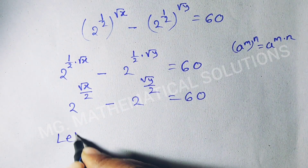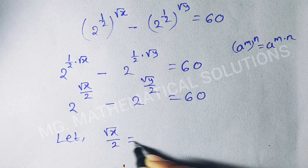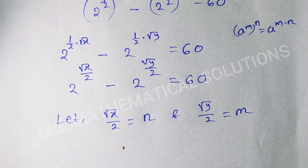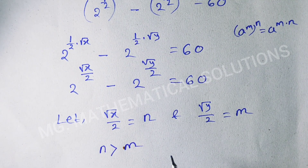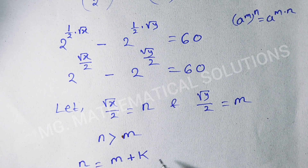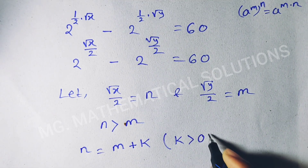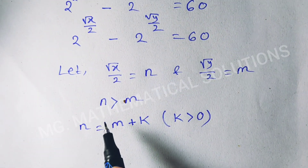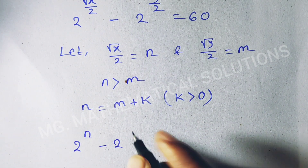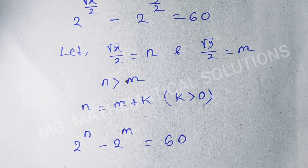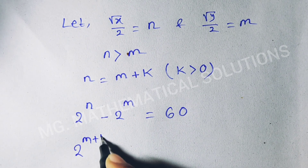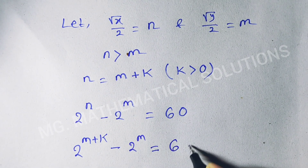Now let root x over 2 equal to n and root y over 2 equal to m, where n greater than m. We let n equal to m plus k where k greater than 0. So now this equation becomes 2 to the power n minus 2 to the power m equal to 60. Since n equals m plus k, we get 2 to the power m plus k minus 2 to the power m equal to 60.